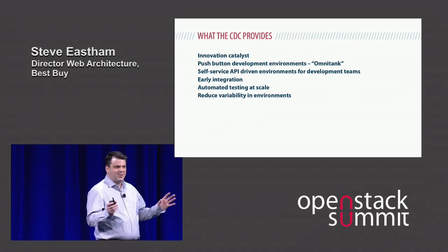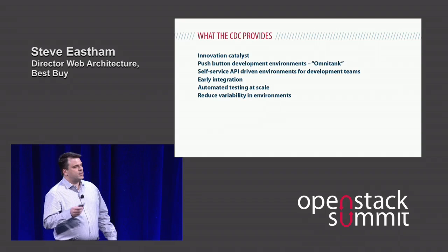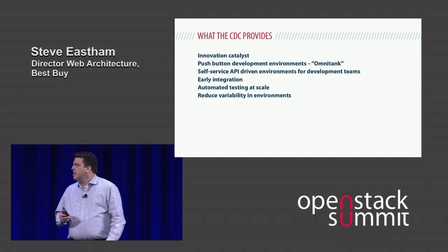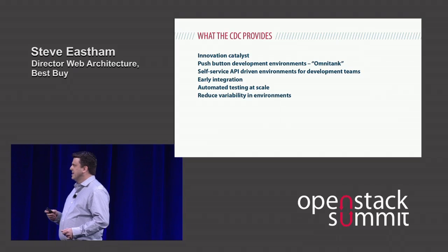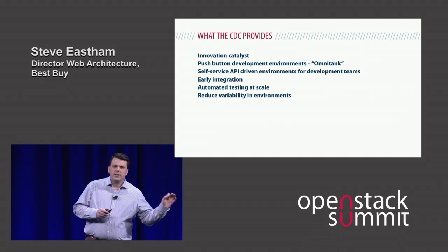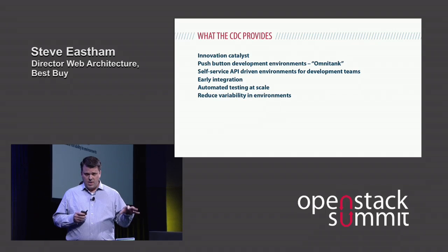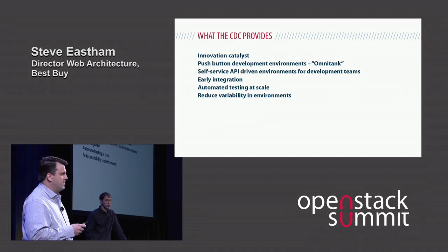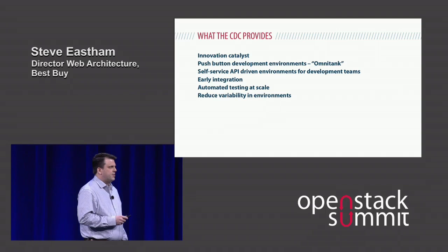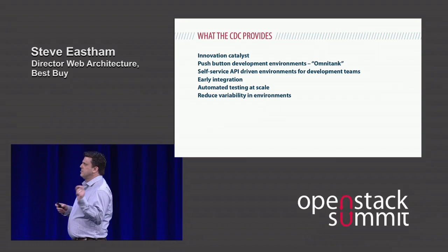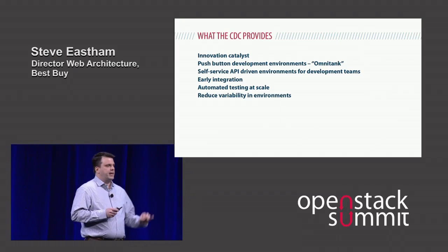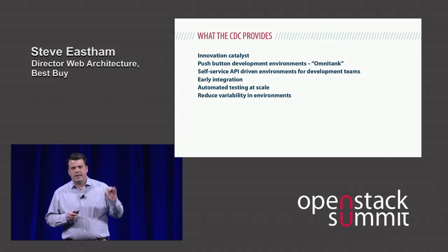They codenamed it OmniTank — I have no idea why, but it's an awesome name. With self-service APIs, teams can go in and launch their own environments. We used Jenkins to actually launch Jenkins, so teams can have their own push-button Jenkins. We also use it for early integration — one of the things you want to do in web development is not wait a long time to integrate with other teams, because that kicks your development cycle way back. It's all about speed, and automated testing at scale. You can run a lot of Jenkins executors and reduce our automated testing time to just a few minutes, running through a full regression suite and getting away from manual touching and changing of environments — everything's automated, and that reduces variability.